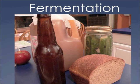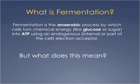I want to talk about fermentation and how it works, but first we should talk about what fermentation is. Fermentation is an anaerobic process by which cells turn chemical energy, usually glucose, into ATP, the common energy currency of the cell. To do this, they use an endogenous electron acceptor — endogenous meaning internal to the cell.